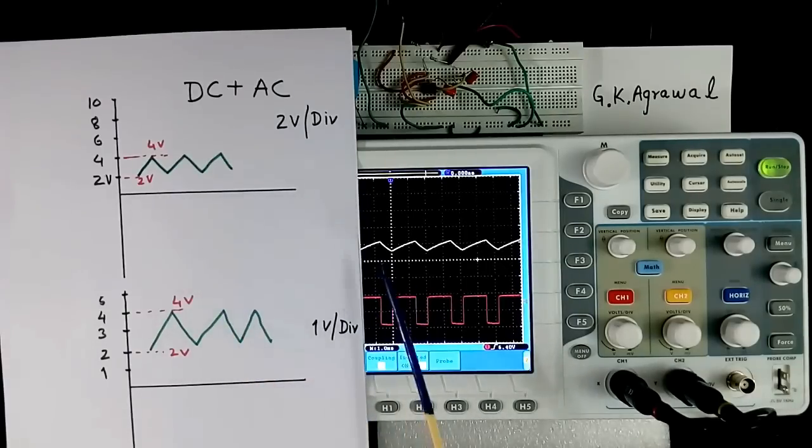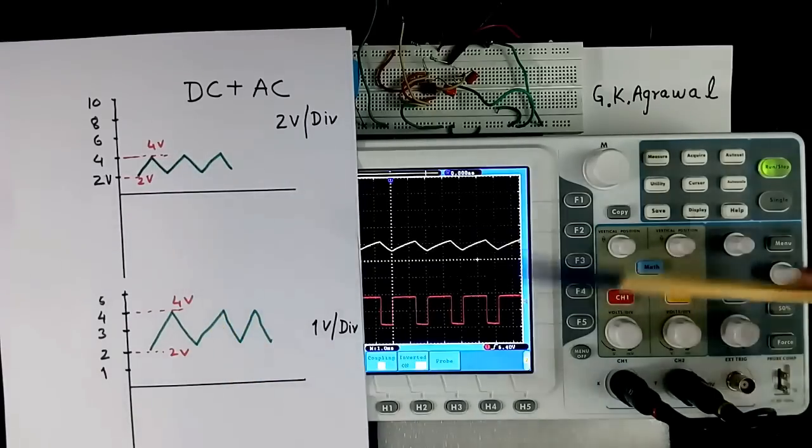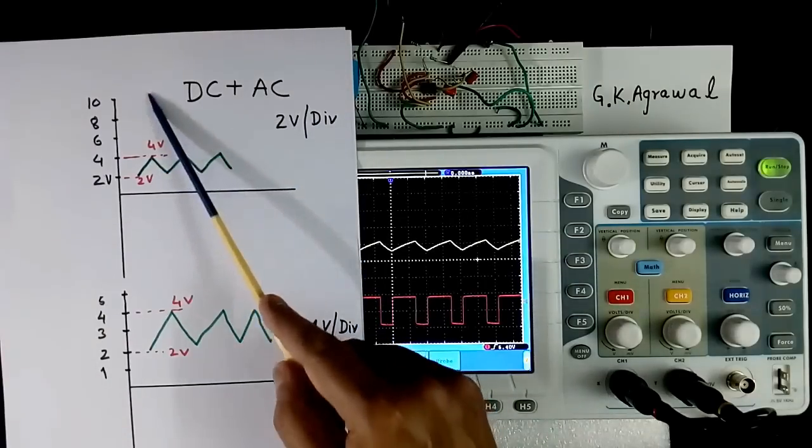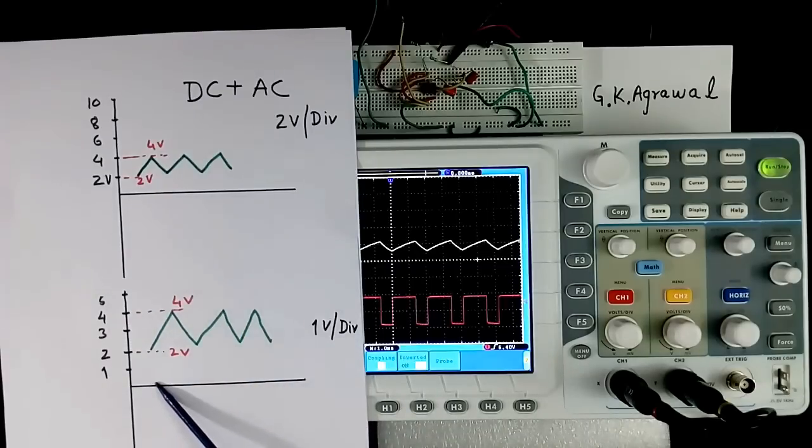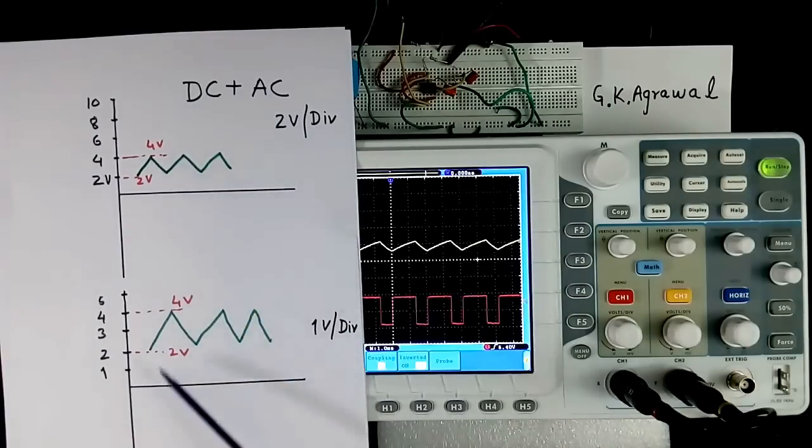Now suppose one signal is like this. This yellow one I am showing here. This has DC value and AC value both. And this is zero line. And scale is 2 volt per division. Now if we make 1 volt per division, everything will go up. DC also will be like this. And AC also will be like this. This point will go little higher. This point will go little higher. I will show. See. Both got shifted.